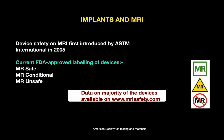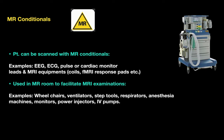Device safety in MRI was first introduced by ASTM (American Society for Testing and Materials) in 2005. Current FDA-approved labeling for devices are: MR Safe (green), MR Conditional (yellow), and MR Unsafe (red). Data on the majority of devices are available at www.mrisafety.com. MR Conditionals include EEG, ECG, pulse or cardiac monitor leads, and MRI equipment like coils and functional MRI response pads.